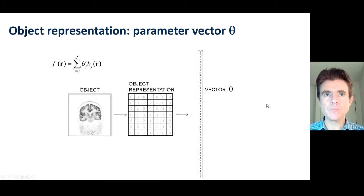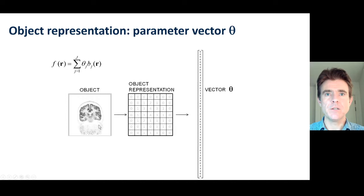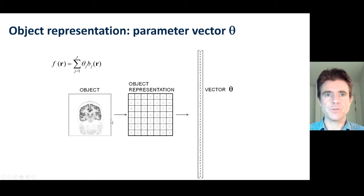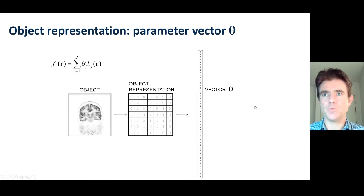Here it is again for a cross-section of a PET scan, showing what we're assuming is the continuous object, just as an illustration. Then we'd discretize it and stack it into one huge vector.